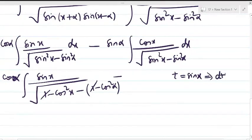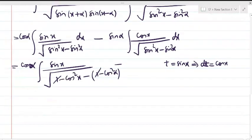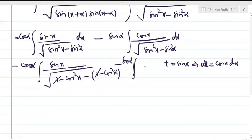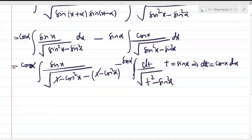For the substitution t = sin(x): differentiating gives dt/dx = cos(x), so dt = cos(x)dx. The second integral becomes -sin(α) ∫ dt / √(t² - sin²α), since cos(x)dx is replaced by dt.